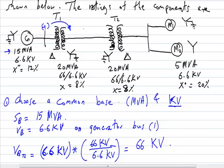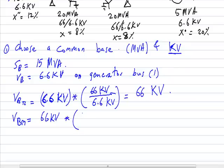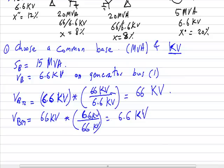Now the base voltage on the transmission line is 66 kV. I transfer this to find the base voltage at the motor terminals, V_base_M. V_base_M equals 66 kV multiplied by the transformer two turns ratio: 6.6 kV (secondary) divided by 66 kV (primary), which gives 6.6 kV as the base voltage at the motor terminals.